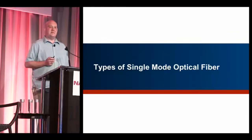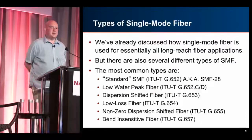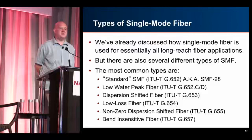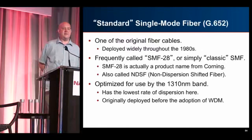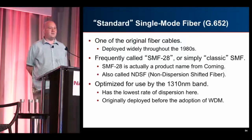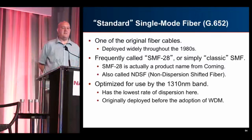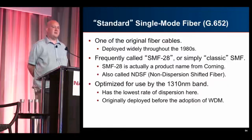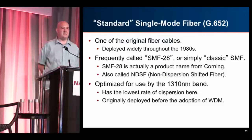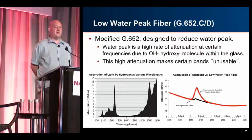Now let's talk about different types of single-mode fiber. Single-mode is used for all long-reach applications, but there are many types. Standard single-mode fiber — SMF-28, a Corning product name that became the standard — is also called NDSF (non-dispersion-shifted fiber). It's really optimized for use around 1310nm, where it has the lowest rate of dispersion. It was designed before the deployment of WDM — no one was thinking about WDM at the time. Then there's low water peak fiber, which removes those hydroxyl molecules from the glass, getting rid of the absorption peak where hydrogen makes parts of the spectrum unusable.